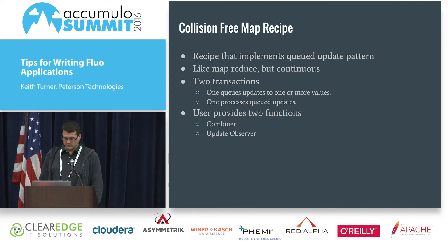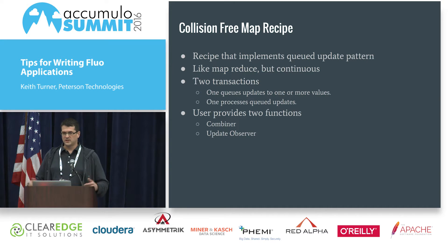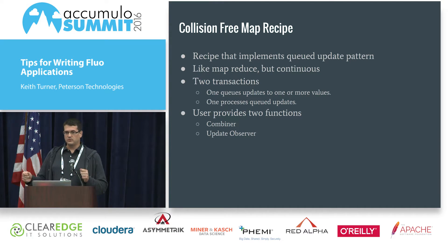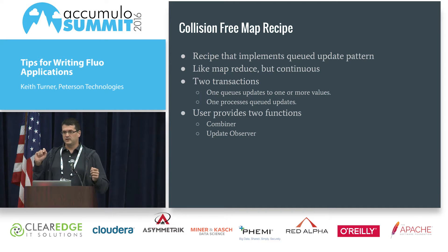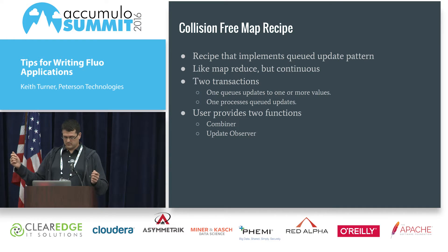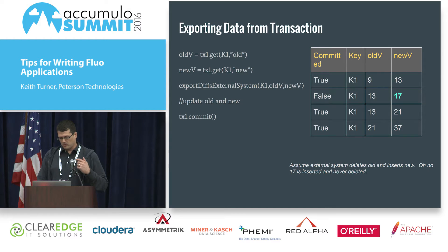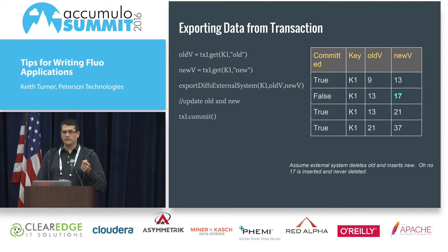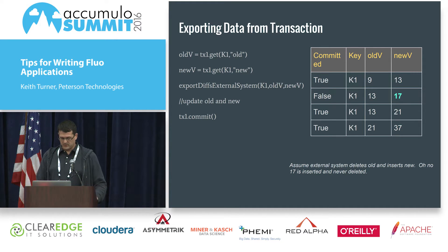As a user of the collision-free map, you implement two functions: a combiner — like a MapReduce combiner that works on a subset of data and squishes it down — and an update function that gets notified when a value changes, receiving the old and new value. For a URI inbound link count, that function would be called when the count changed, for example: 'for example.com/foo, the inbound link count went from 50 to 60.'